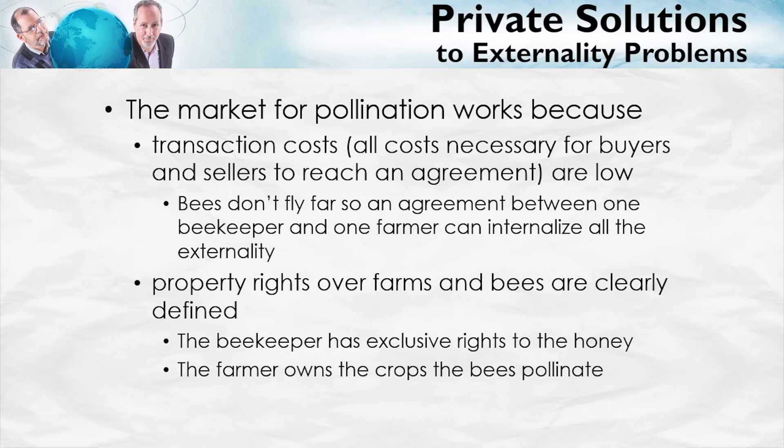Moreover, the property rights here are very clear. The beekeeper has the rights to the honey. The farmer owns the crops that the bees pollinate. There isn't going to be a lot of bargaining and disagreement about who owns what. The property rights are clear. In other cases of externality, some of the ones we've looked at previously, neither of these things are true. Transactions costs are high and property rights are unclear.